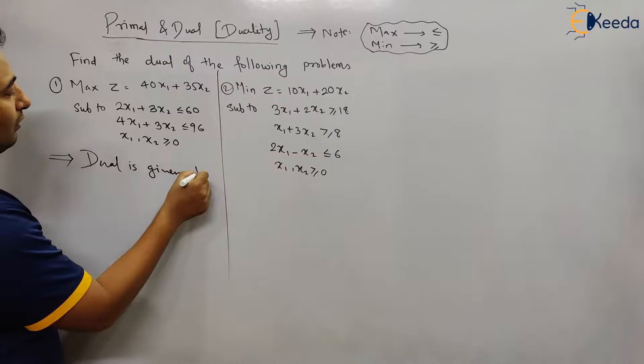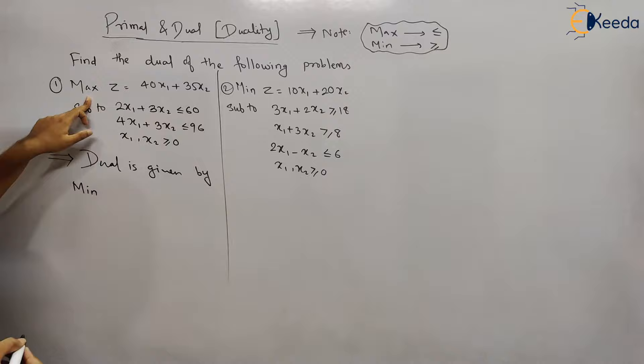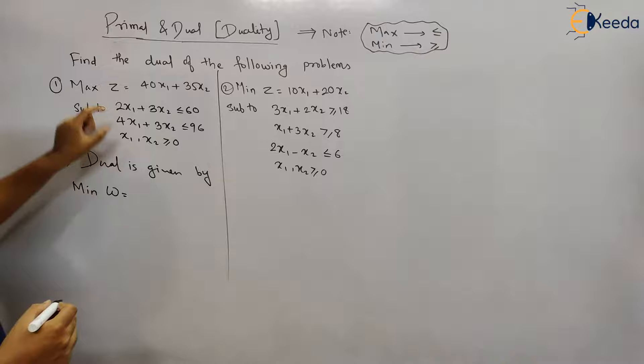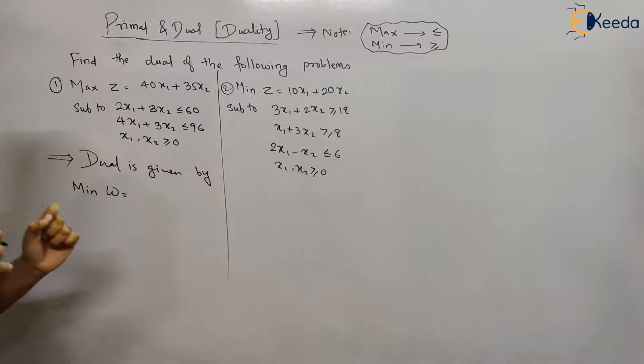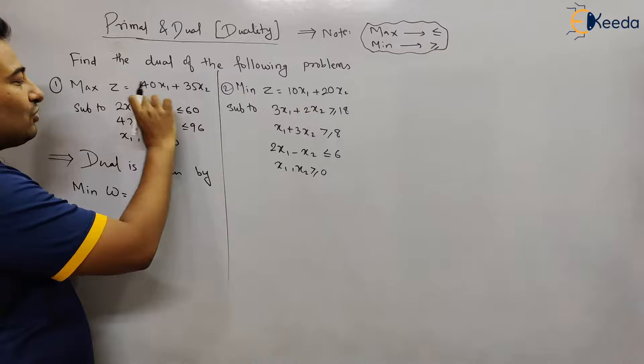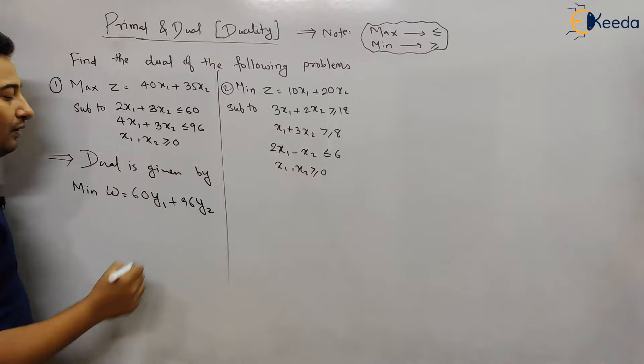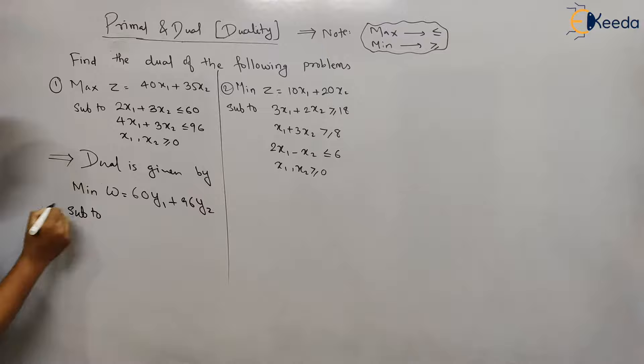The dual is given by: if the primal is maximized, its dual will become minimized. The objective function W is formed based on the right-hand side of the constraints. There are two constraints, and here we have 60 and 96. Therefore it will be: minimize W = 60y1 + 96y2.